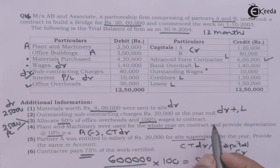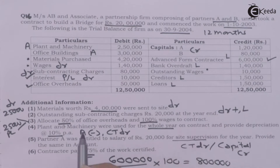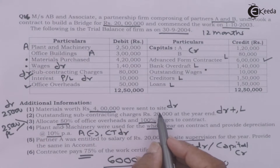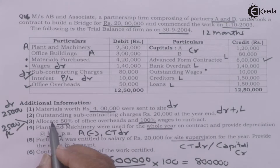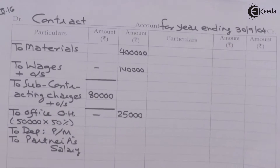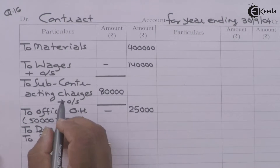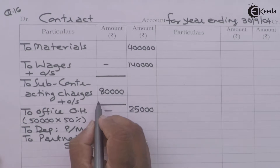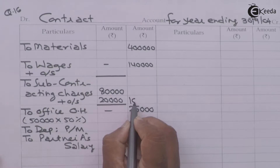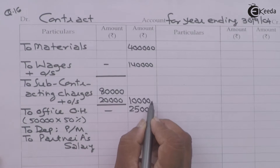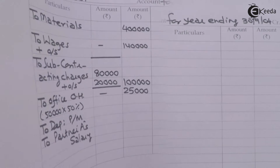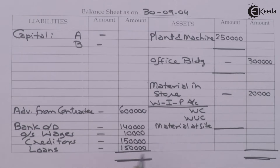Revisiting the additional information: material worth 4 lakhs sent to site — already recorded. Outstanding subcontracting charges of 20,000: in the contract account debit side we have subcontracting charges paid 80,000; adding the outstanding amount of 20,000 makes the total 1 lakh. This will have a second effect on the liability side of the balance sheet as outstanding subcontracting charges of 20,000.